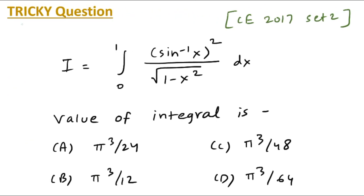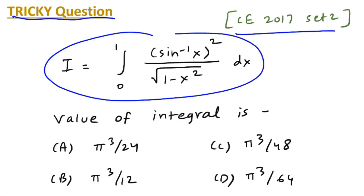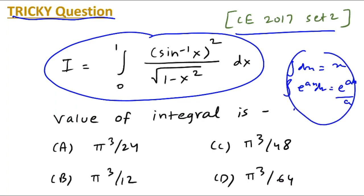Moving to the next tricky question, asked in Civil Engineering 2017 Set 2 gate paper: I equals the integral from 0 to 1 of (sine inverse x) squared upon root(1 minus x squared) dx. The value of this integral is what? We have four options and one would be correct. This question is based on definite integrals; again we do not know the standard result for this kind of function, so you have to think how to solve it.